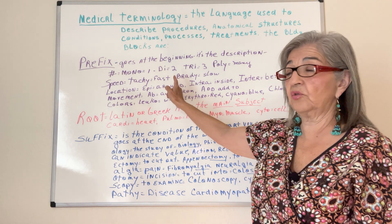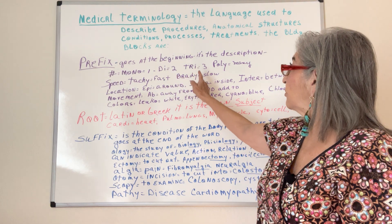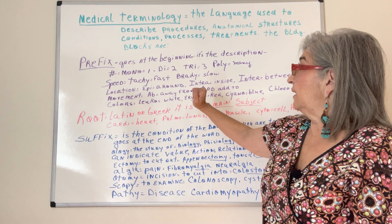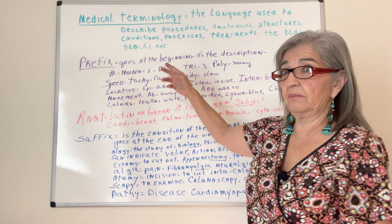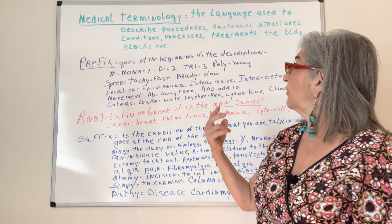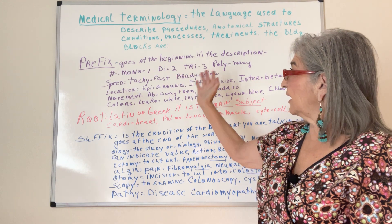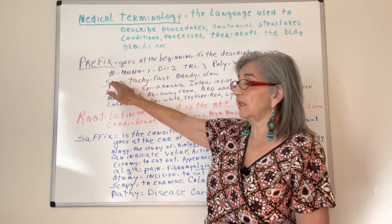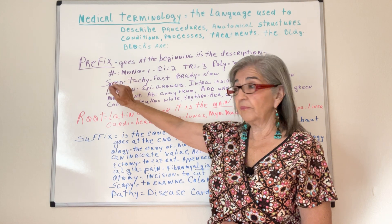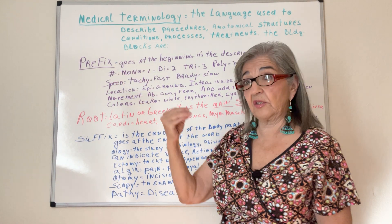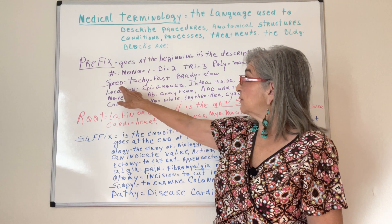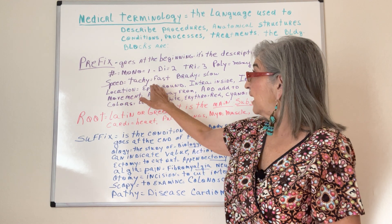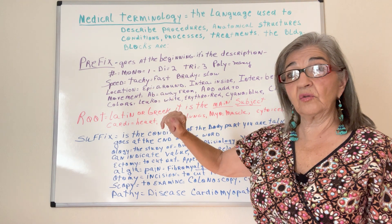For example, 'diaphysis' means it has two ends. It describes the number of whatever you're talking about. It also describes speed — 'tachy,' like tachycardia, means too fast, and 'brady' means too slow.